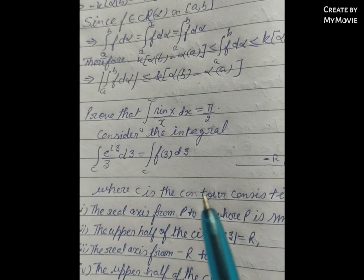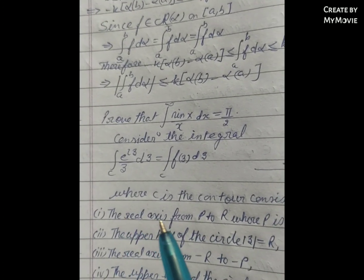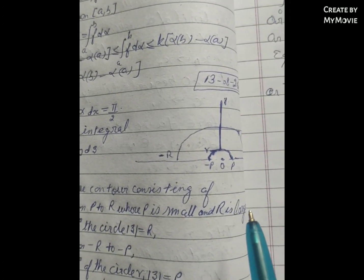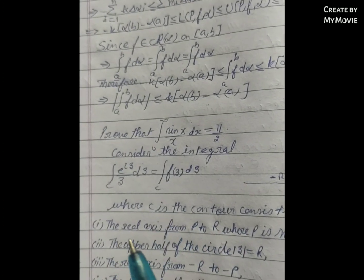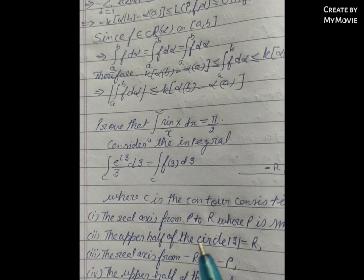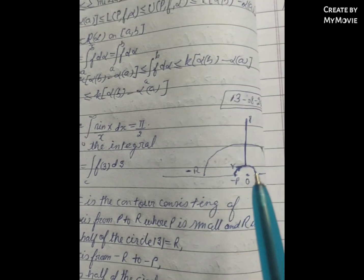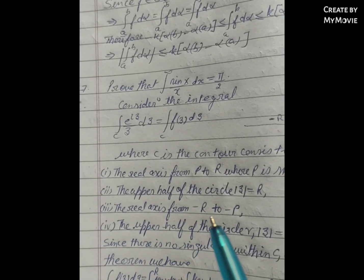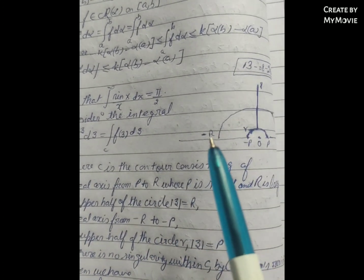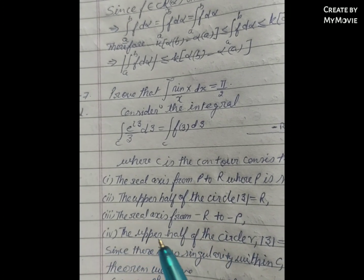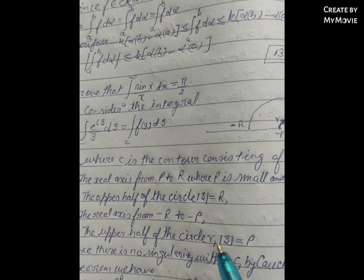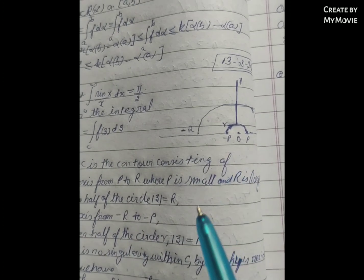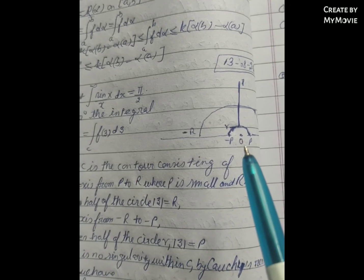Here C is a contour consisting of: the real axis from ρ to R, where ρ is small and R is large; the upper half of the large circle where |z| = R; the real axis from −R to −ρ; and the upper half of the small circle γ where |z| = ρ.